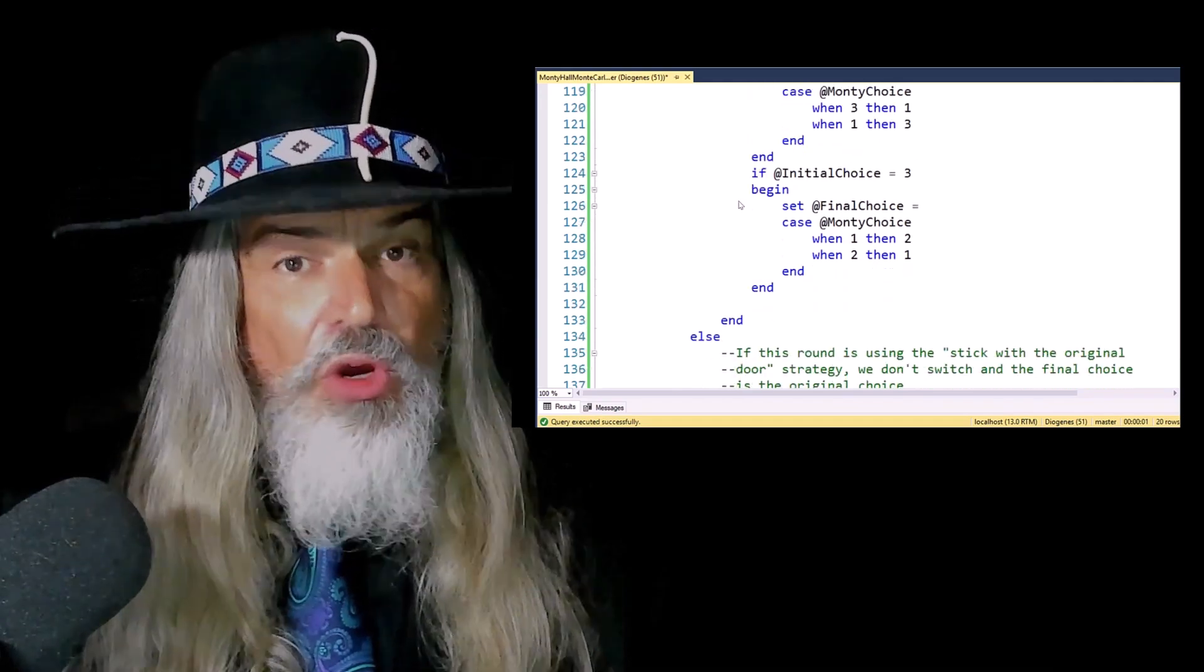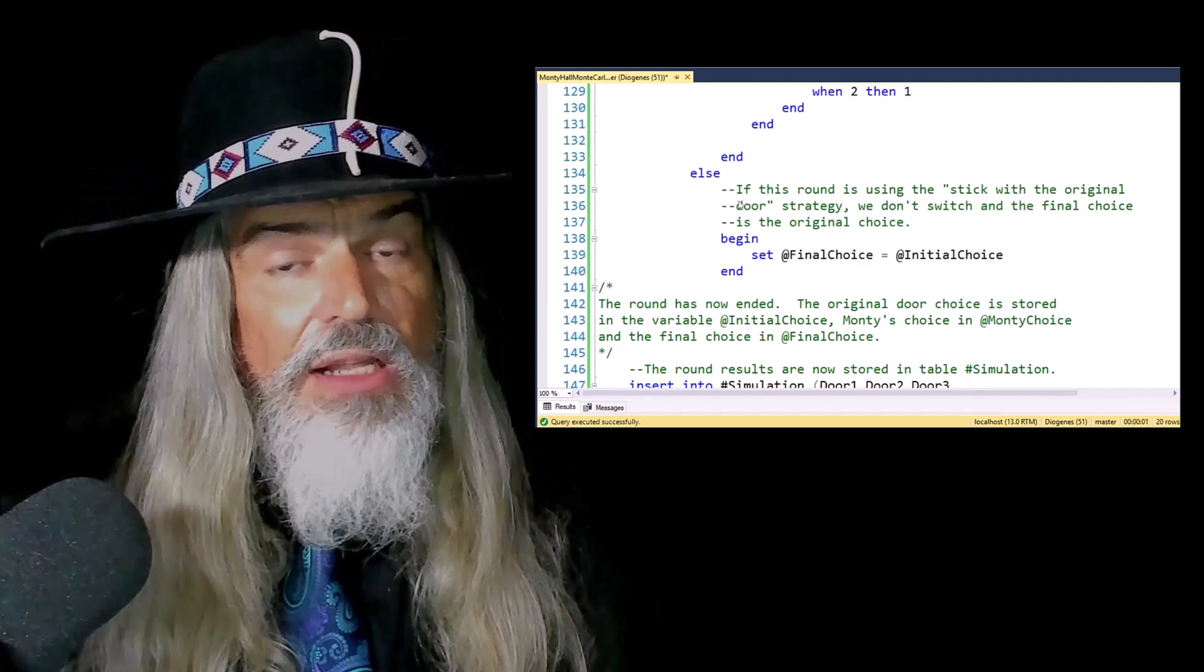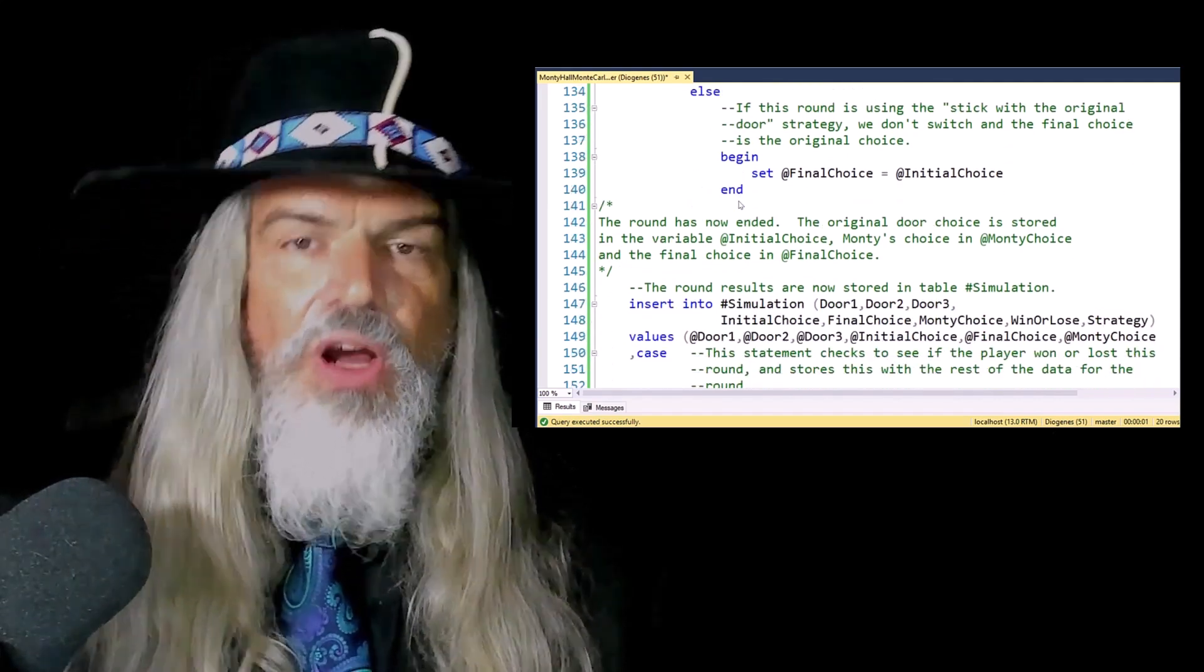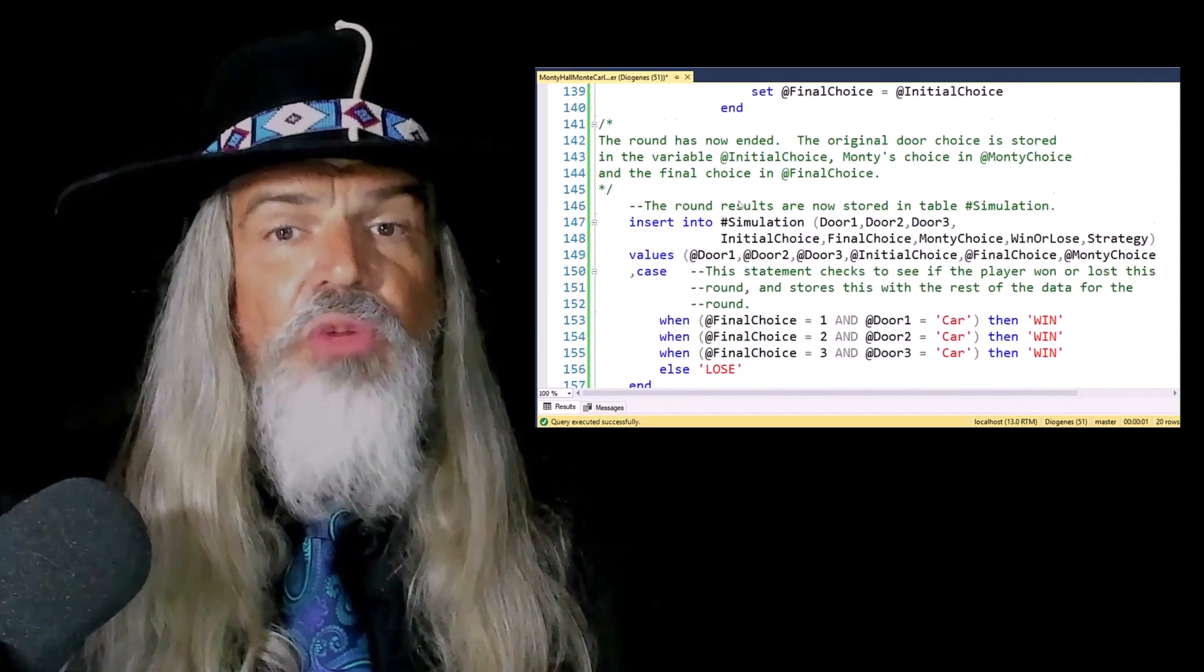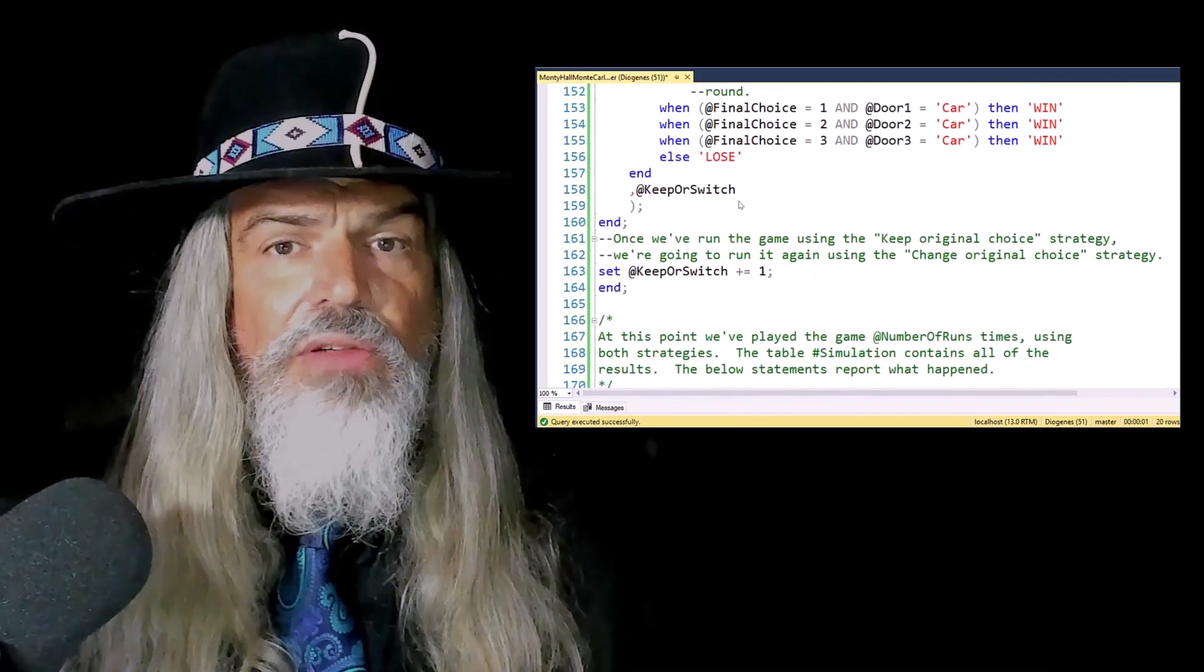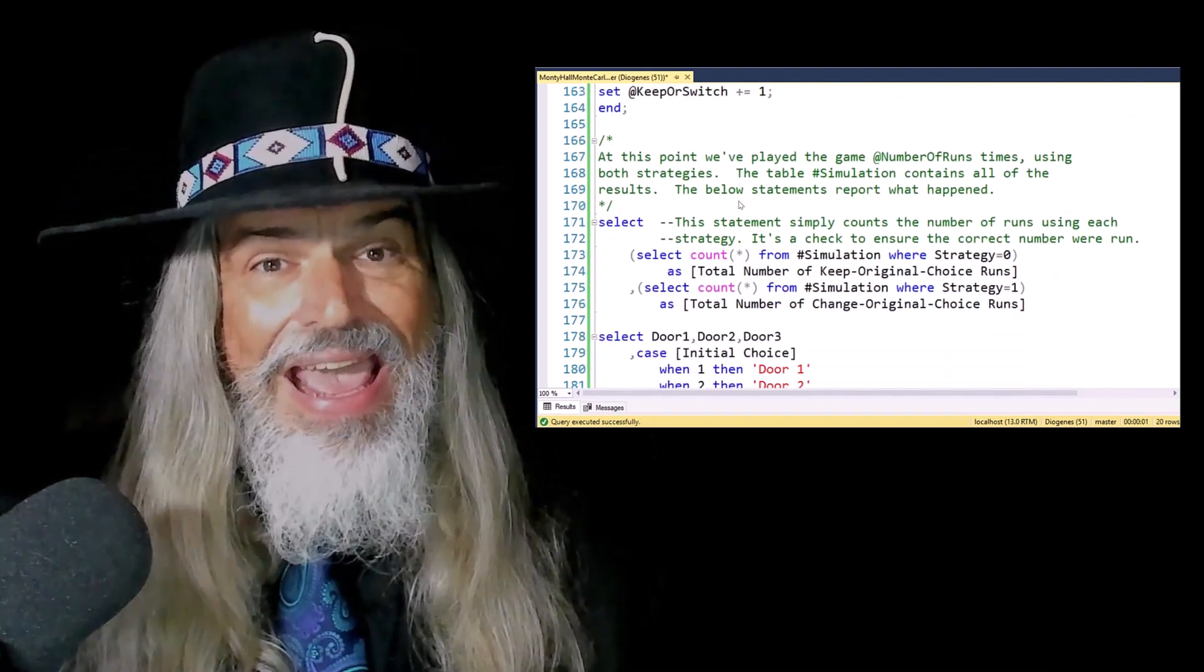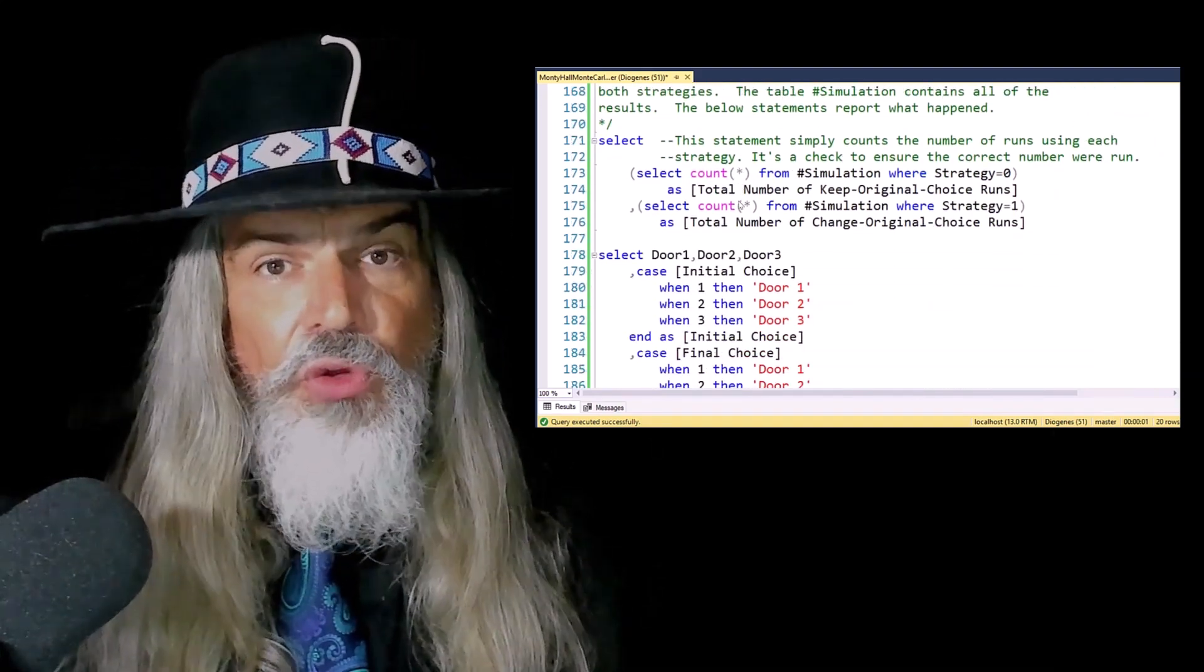So after we record the data in this data table, we're going to start a looping structure, an iterative structure, a while loop, in which we loop through, total it two million times, and we simulate the assignment of zonks and a car to the three doors.